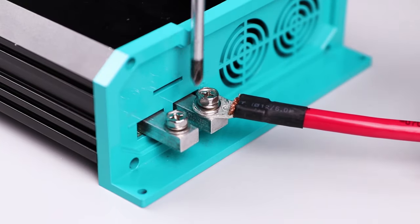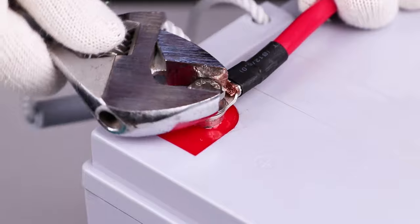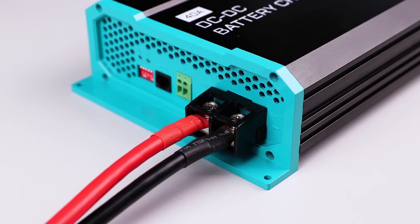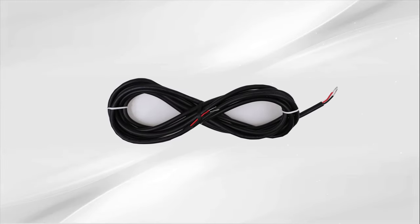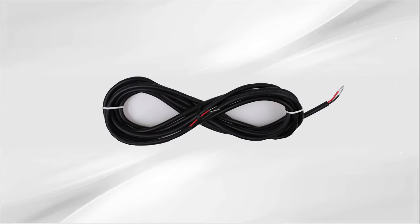The charger does not come with cables. We will be using 4 gauge cables to connect the starter battery and deep cycle battery to the charger. We will be using a 16 gauge wire for the D plus signal cable.